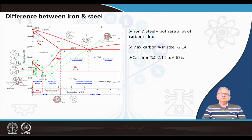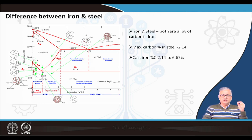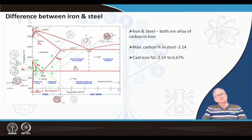Pure iron is basically a very soft and malleable material. As we introduce an impurity like carbon into it, it becomes stronger — the strength increases. That is why the strength of steel is very high compared to pure iron.